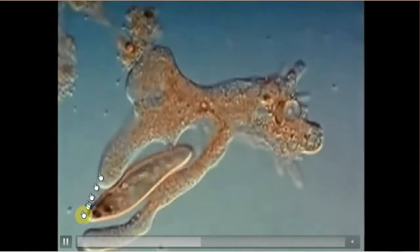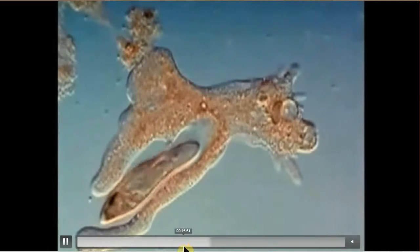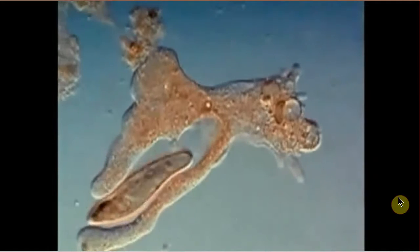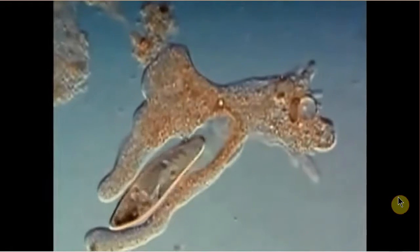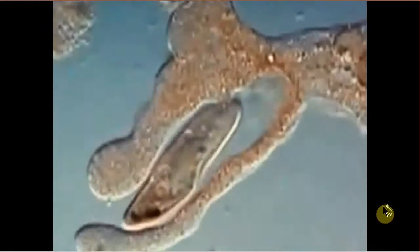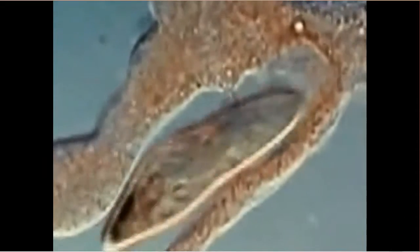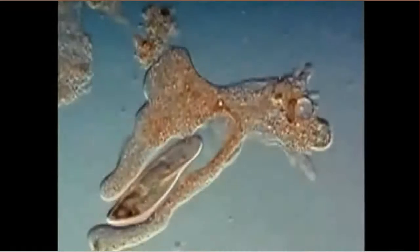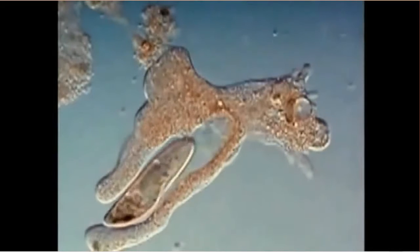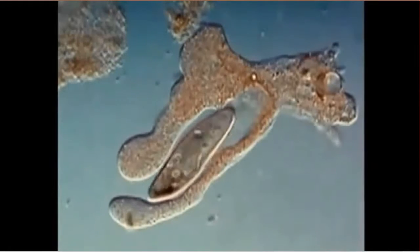So you now see that the amoeba is extending its what are called pseudopods. And it's enveloping that paramecium to the point where it gets stuck. And then eventually what will happen is that it will completely seal off. The cell wall here on the amoeba will break down and start releasing digestive enzymes and we'll start breaking down that paramecium. So at this point, this paramecium is kind of stuck and will eventually be digested.